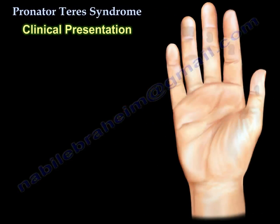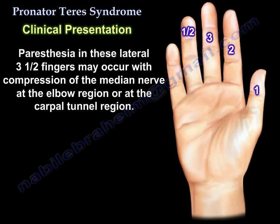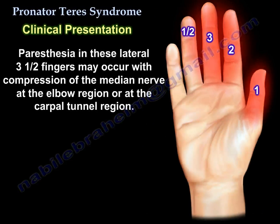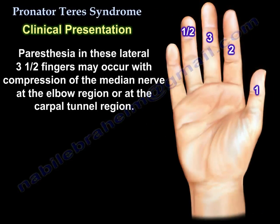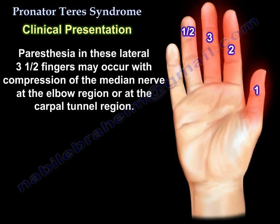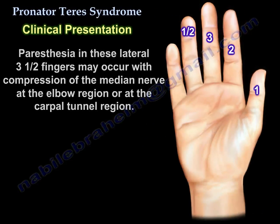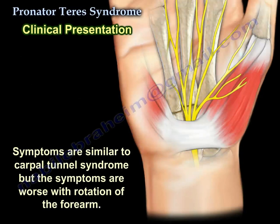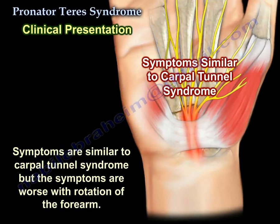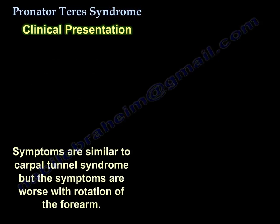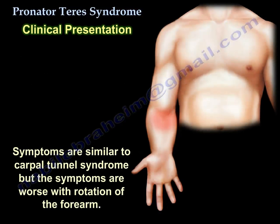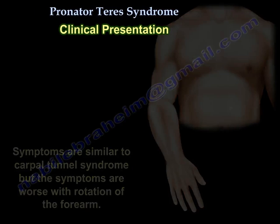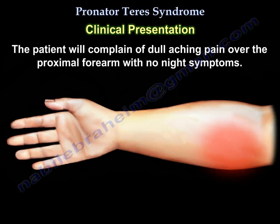Clinical presentation: paresthesia in the lateral three and a half fingers may occur with compression of the median nerve at the elbow region or at the carpal tunnel region. Symptoms are similar to carpal tunnel syndrome, but the symptoms are worse with rotation of the forearm. Patients will complain of dull aching pain over the proximal forearm with no night symptoms.